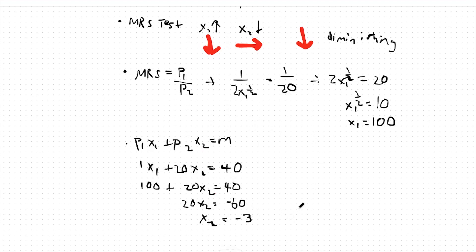Notice how we're demanding a negative quantity of one of our goods. This is due to the fact that 100 units of x1 will set us over the income that we have available to us. The best we can do, then, is to zero out good 2 and purchase all of good 1. What this looks like is x1 plus 20 times 0 equals 40. So, optimally, we purchase 40 units of good 1 and 0 units of good 2.